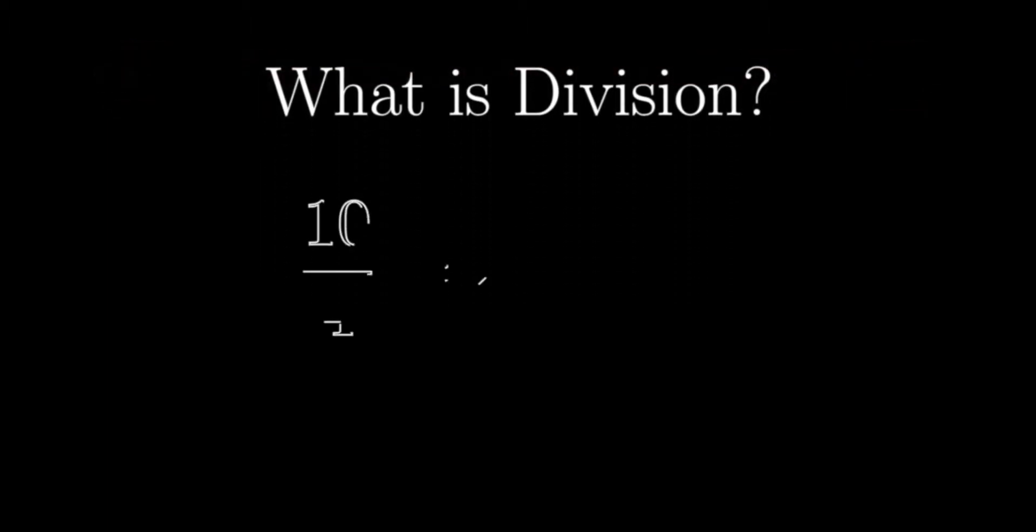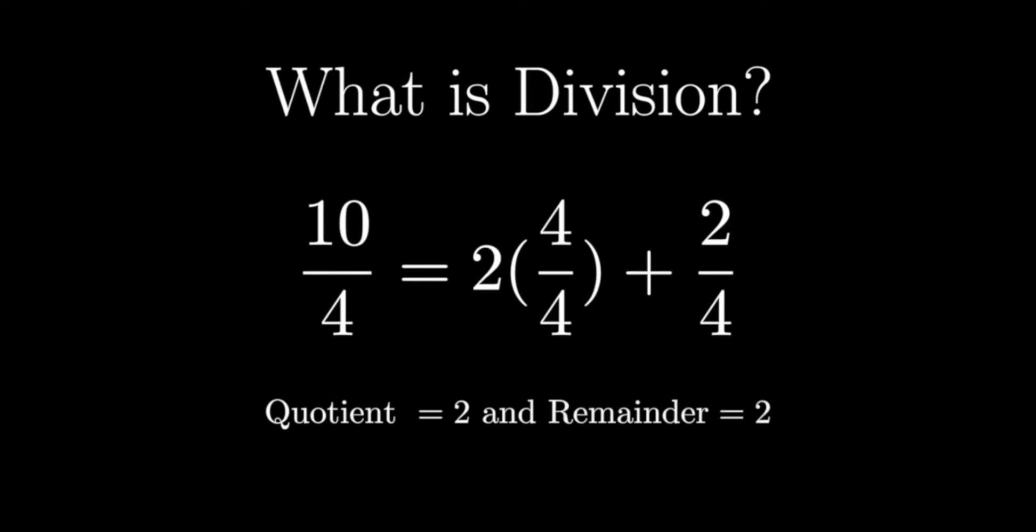10 divided by 4, as we all know, ends up being 2 with a remainder of 2. So we can say that the quotient is 2 and the remainder is 2. In other words, we can form 2 groups of 4 and have 2 left over.